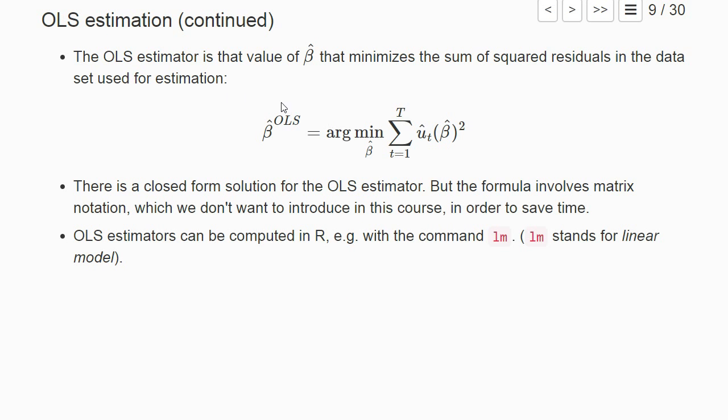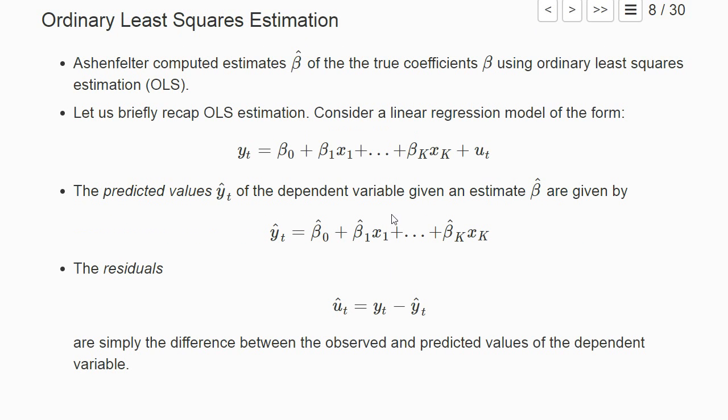The OLS estimator is that value of all possible beta hat—just a vector of numbers—that minimizes the sum of the squared residuals in the data set we use for estimation. These residuals are a function of our estimator beta hat, because the y hat depends on them. If we have a different beta hat, we have a different residual.